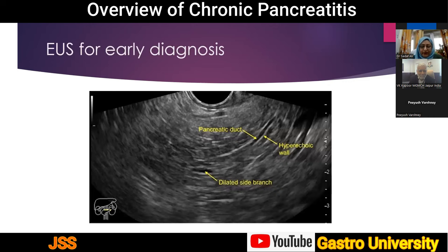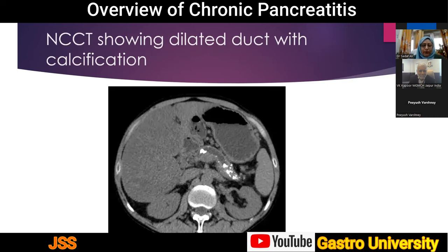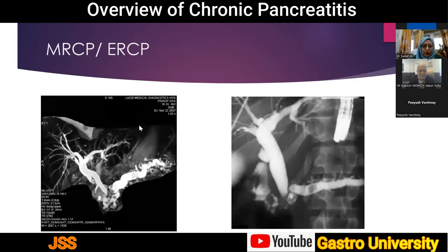For early diagnosis on EUS, one looks for hypoechoic duct walls, small side branch dilatation, and small calcification phenomena. The EUS probe is inbuilt in an endoscope. Medical gastroenterologists use these clues to clinch a diagnosis in equivocal cases. When performing a CT abdomen, a plain CT should always be considered first as it can reveal calcifications. Contrast-enhanced CT then demonstrates ductal dilatation of the pancreatic duct.